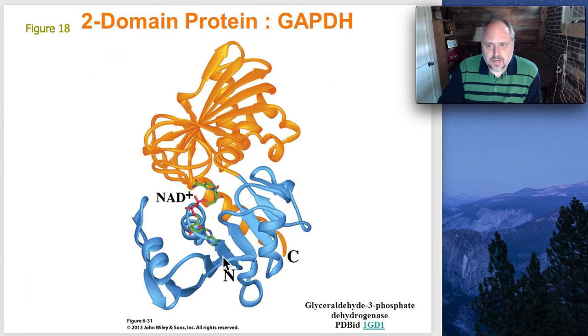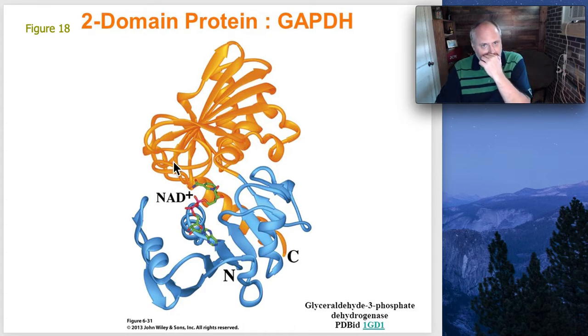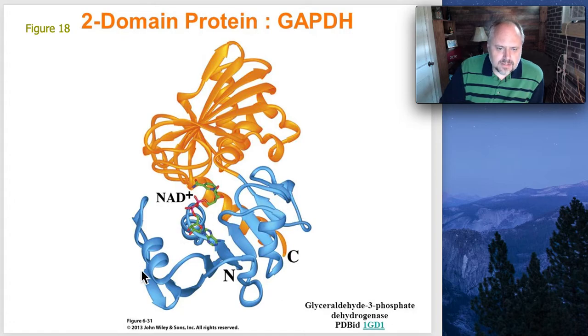So here's a protein called glyceraldehyde phosphate dehydrogenase. This one's not too much of interest to us, although it does play a role in one of the pathways we'll talk about later. And what you'll see here is here's your N-terminus, there's your C-terminus, and you can see this structure here in blue would be one domain and the structure here in orange is a different domain. So this has two functional parts to him. This side will do one thing, this side will do the other.